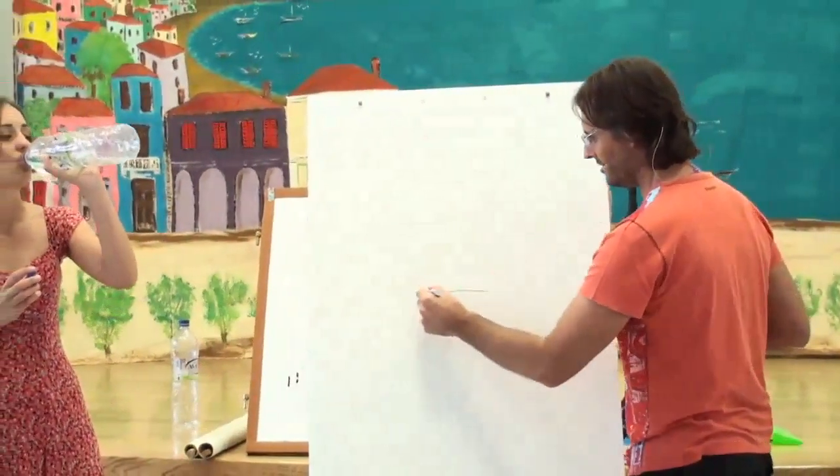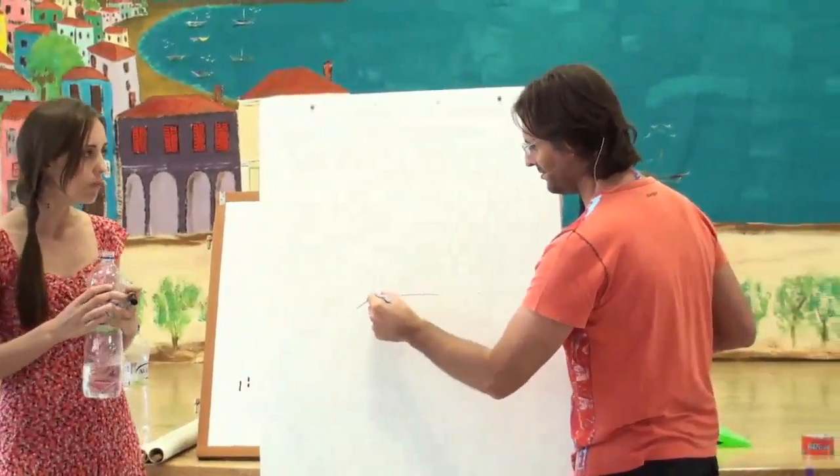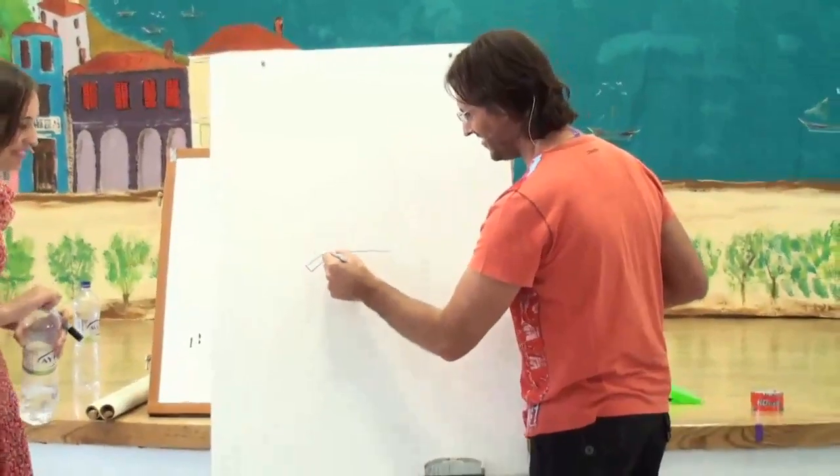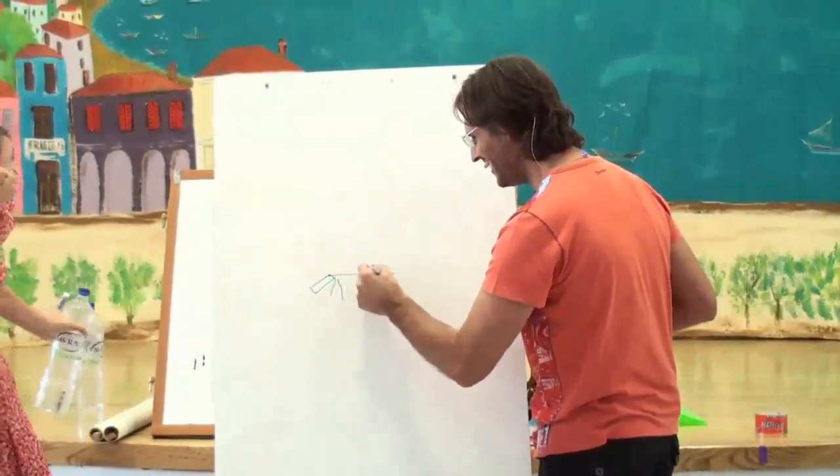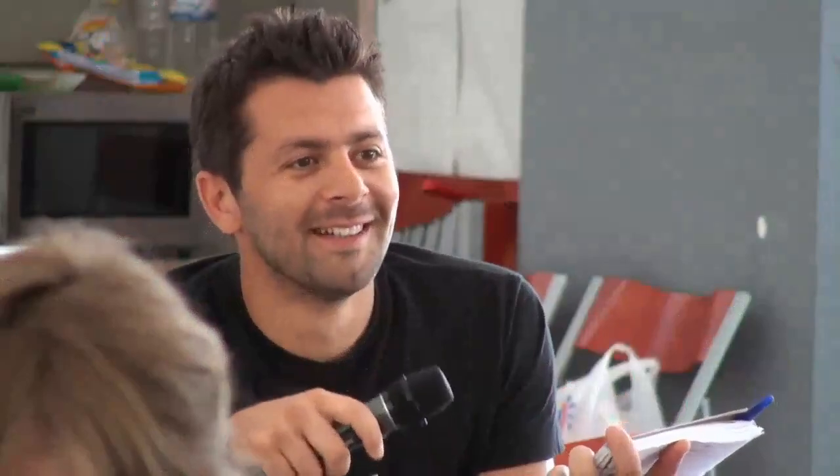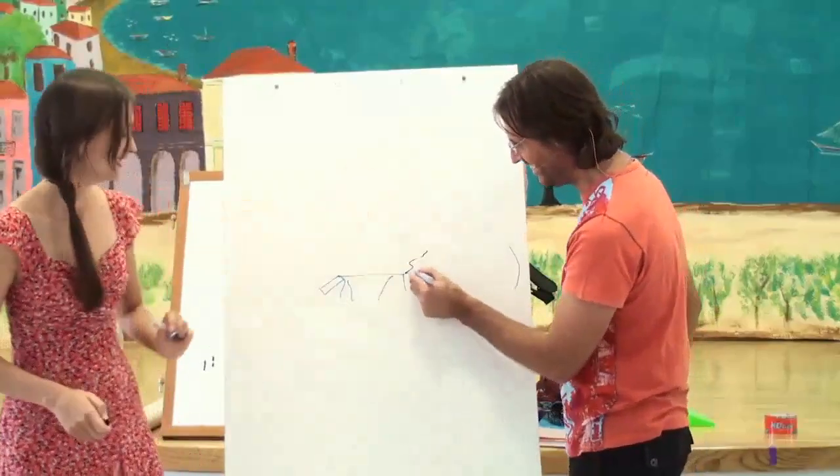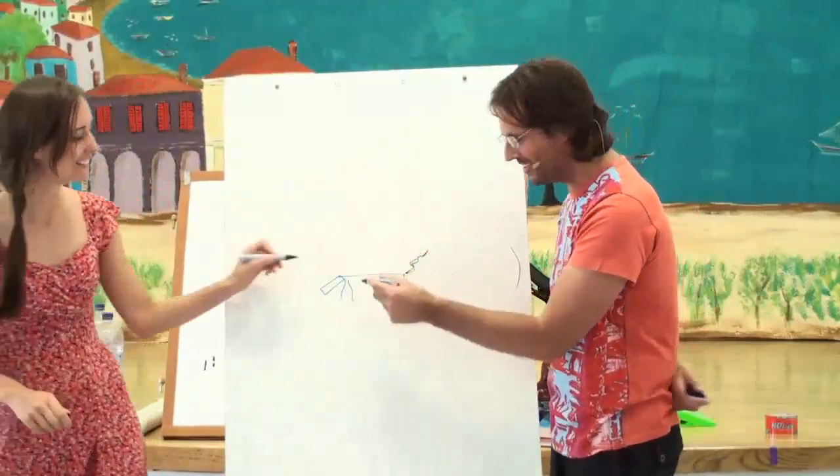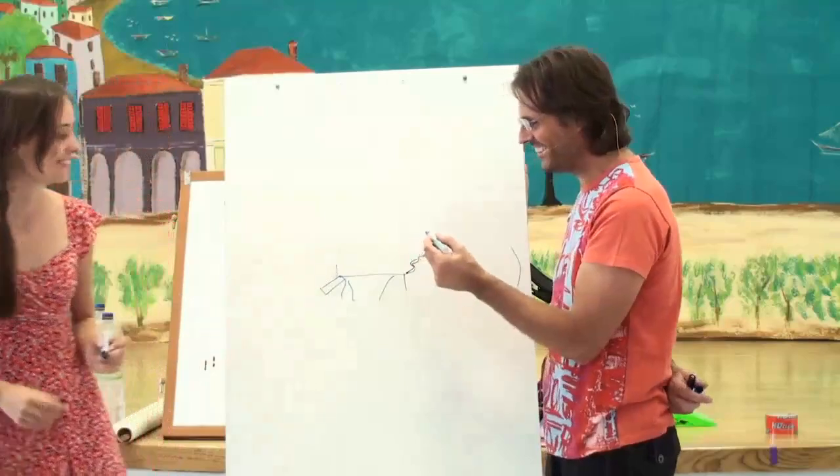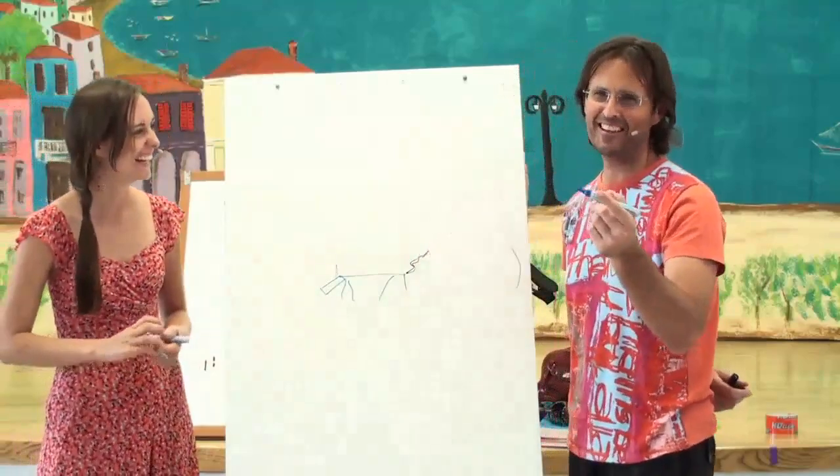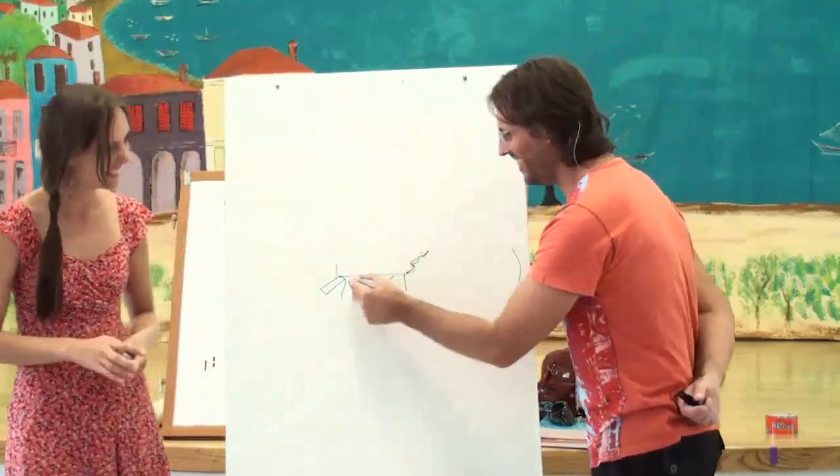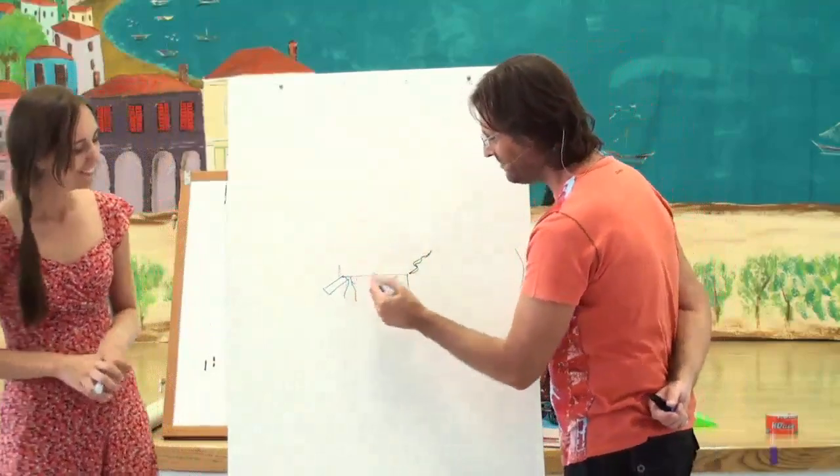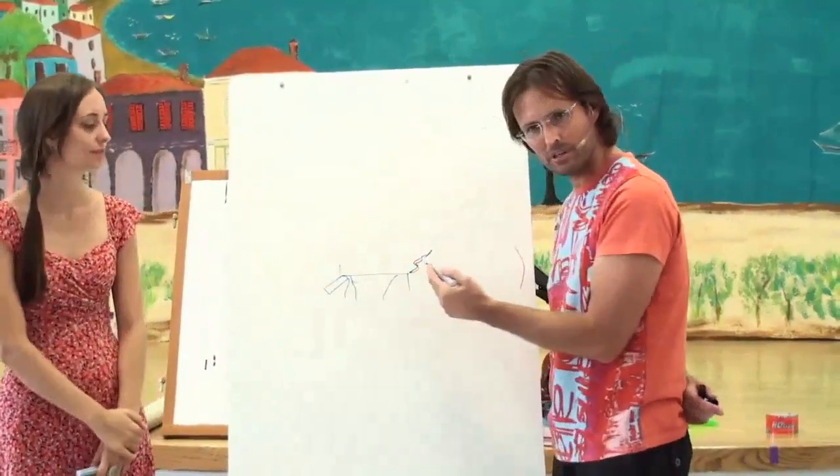So for animals, if we can sort of describe it, so an animal, let's draw a, I'm not very good at drawing animals, even stick figures, right? Peter can do it for you. So there's the animal.